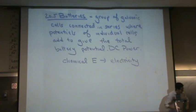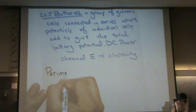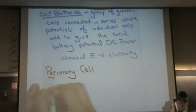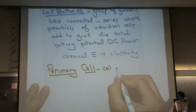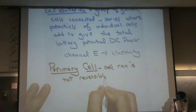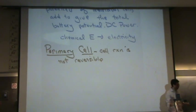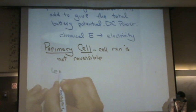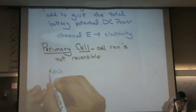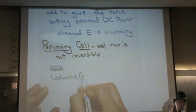One is called the primary cell. This is where the cell reaction is not reversible. So you can't reverse it. Basically, the battery's going to go dead. Within the primary cell, there's more than one category. So I'm going to go into subcategories right now for the primary cell. One is the Leclanche, or the dry cell.